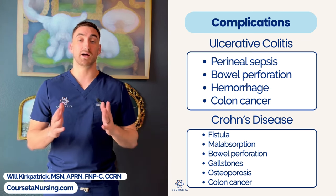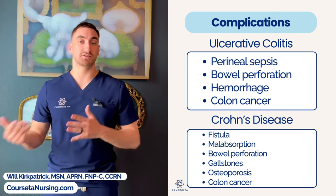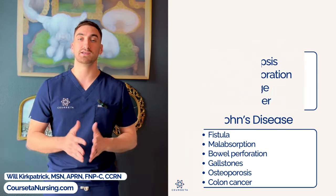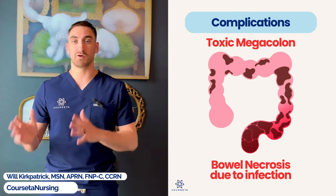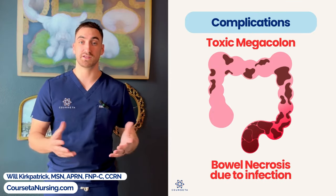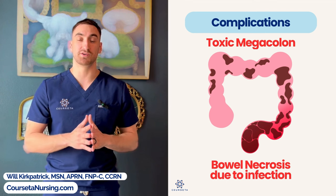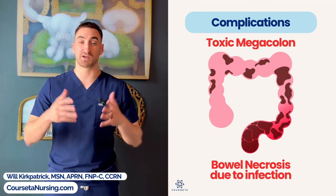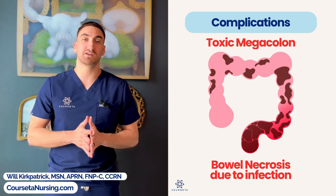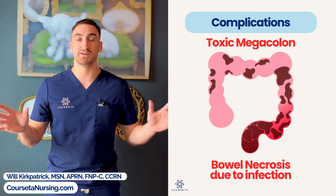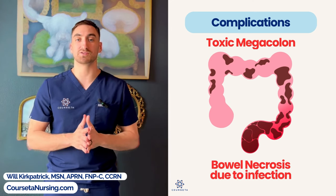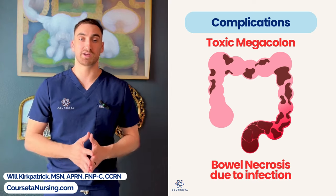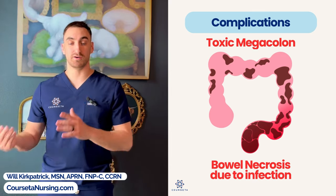One major complication associated with both diseases is toxic megacolon — an infection that penetrates deep into the colon tissue itself and can cause colon death. That necrosis in the bowel can completely stop bowel activity, resulting in an ileus — an actual intestinal obstruction. This is a major complication to write down for both Crohn's and ulcerative colitis.